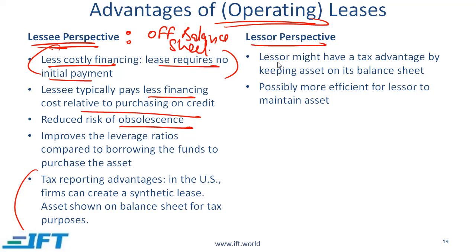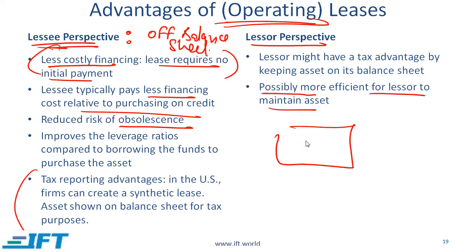Now from the lessor perspective, the lessor might have a tax advantage by keeping the asset on its balance sheet. Another scenario is that it might be more efficient for the lessor to maintain the asset. If you have an asset that requires a very high level of technical skill to maintain, it makes sense for one company to own all those assets and provide the maintenance — a team of highly paid engineers maintaining all leased assets might be more efficient than every lessee paying for an engineer at their location. Generally though, the big advantage is for the lessee.